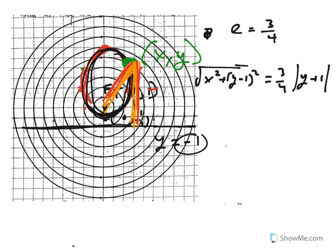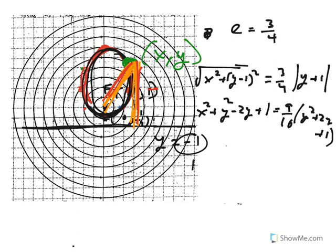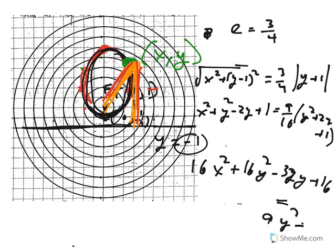Now when I square both sides, I get X squared plus Y squared minus 2Y plus 1 equals 9 over 16, parentheses, Y squared plus 2Y plus 1. Multiply both sides by 16. 16X squared plus 16Y squared minus 32Y plus 16 equals, I like to distribute this 9 on the right, 9Y squared plus 18Y plus 9.